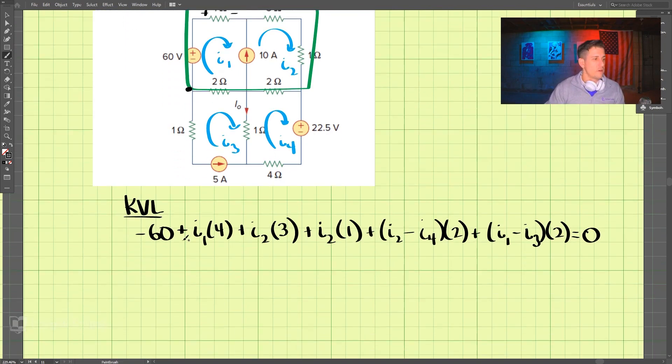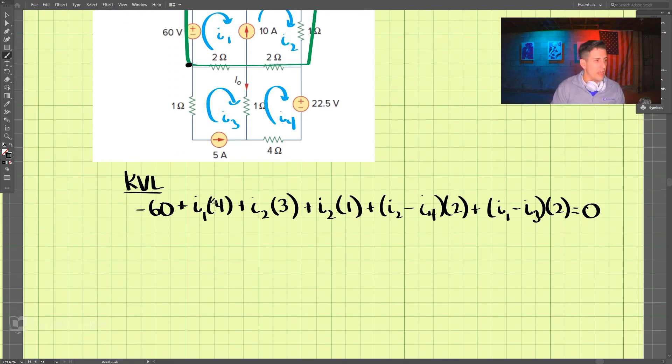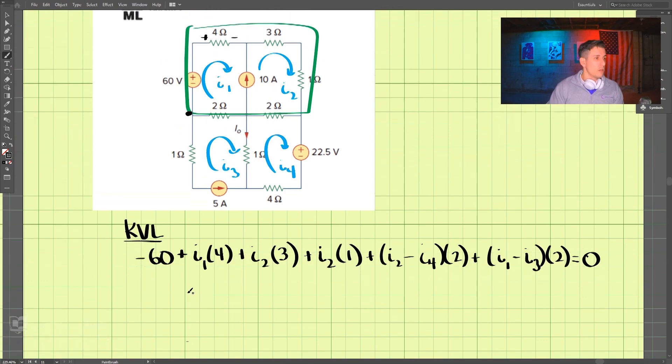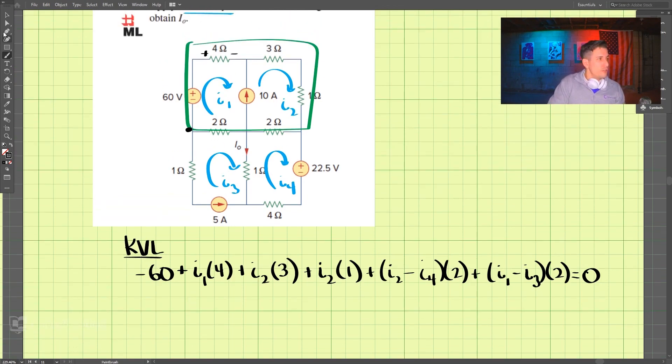Okay, so that's our first equation. We have one, two, three, four unknowns, so we're going to need four equations.